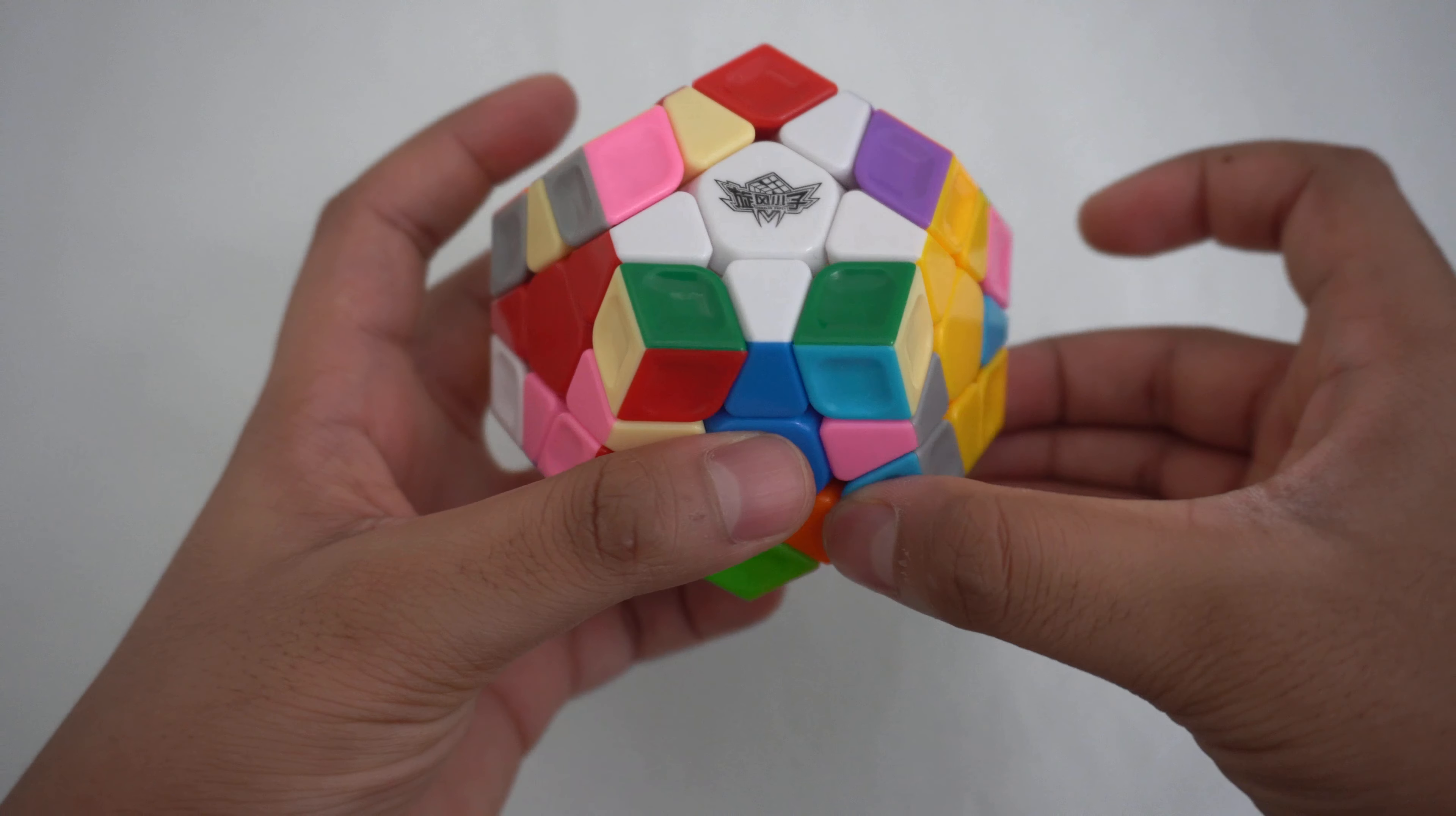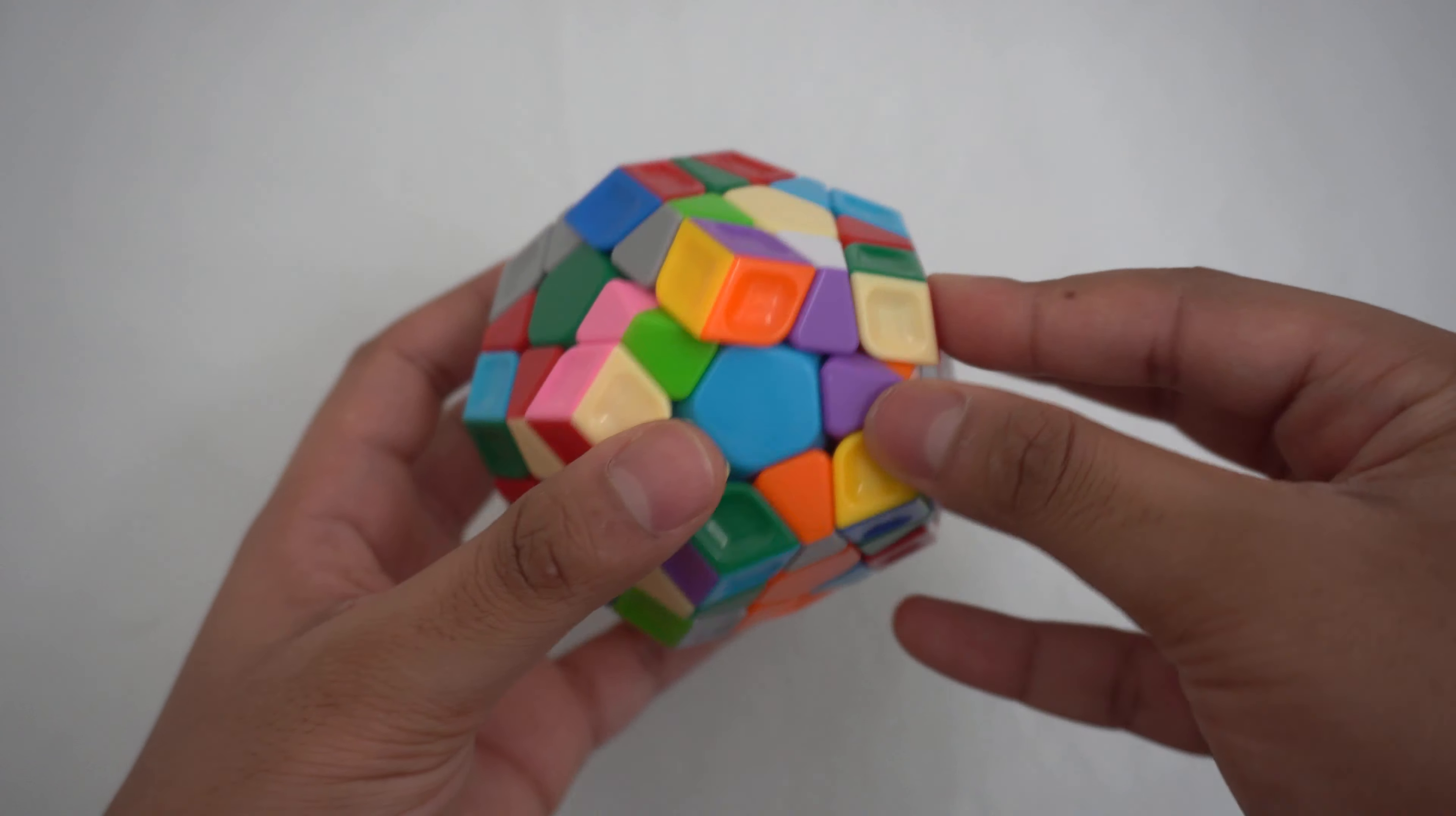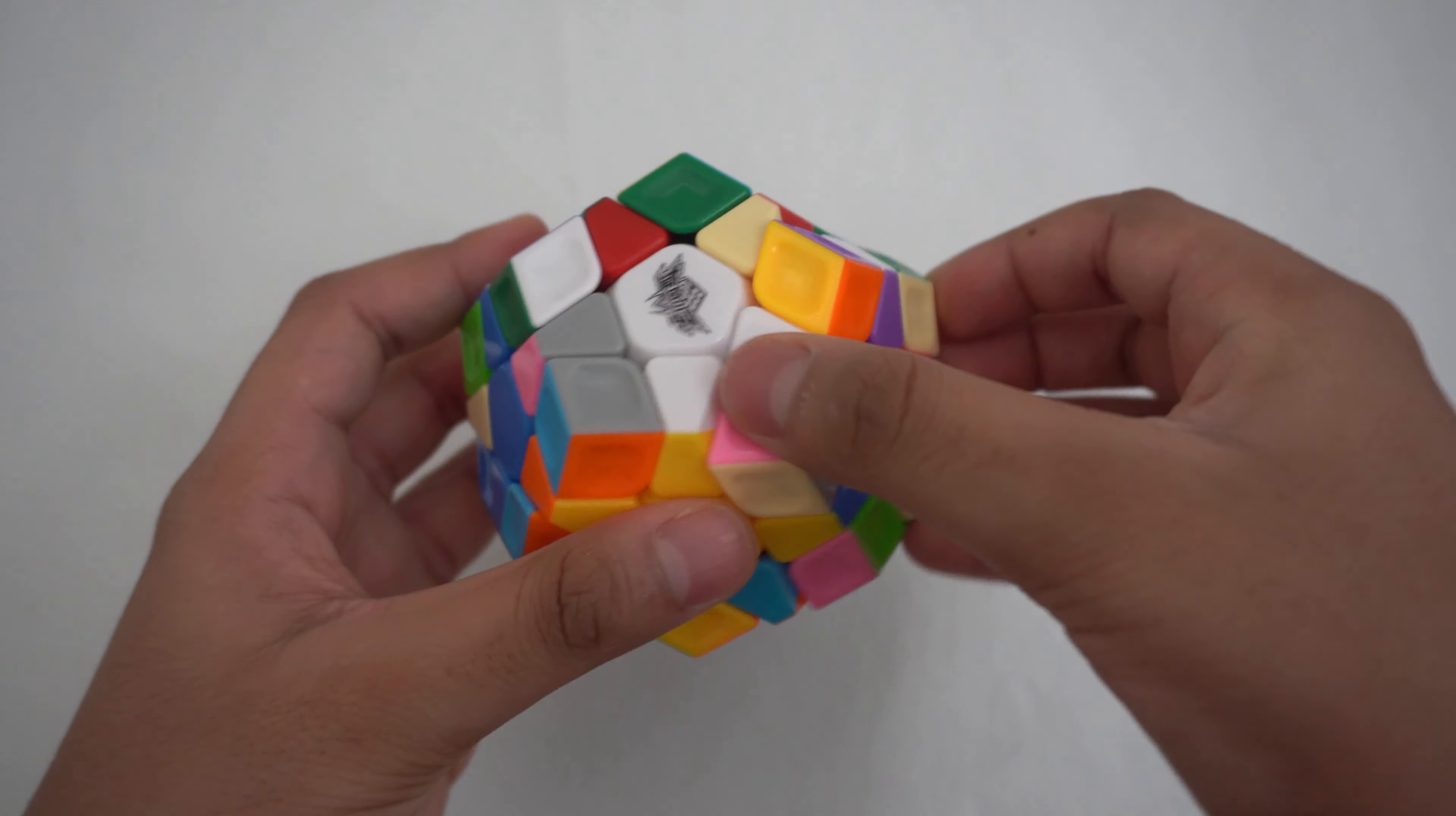Then do that to the other white edge pieces. If you have a white edge piece that is really far away, then move it towards its slot and when it gets close enough, put it in.